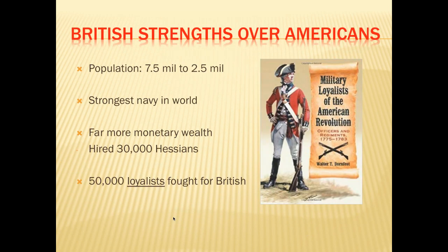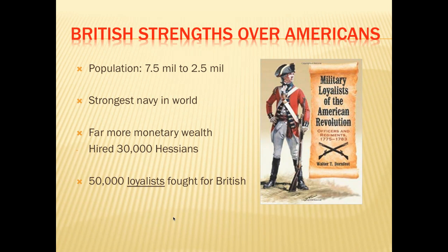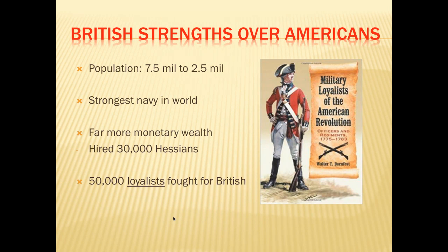But the British had tremendous advantages over the American colonists: a population of 7.5 million English to only 2.5 million Americans, the strongest navy in the world, far more monetary wealth, another 30,000 Hessians hired, and 50,000 loyalists — about 16% of the American population — fighting for King George III. This was a minority revolution: the majority of Americans weren't ready to take up arms against the king; only radical groups were looking to fight.